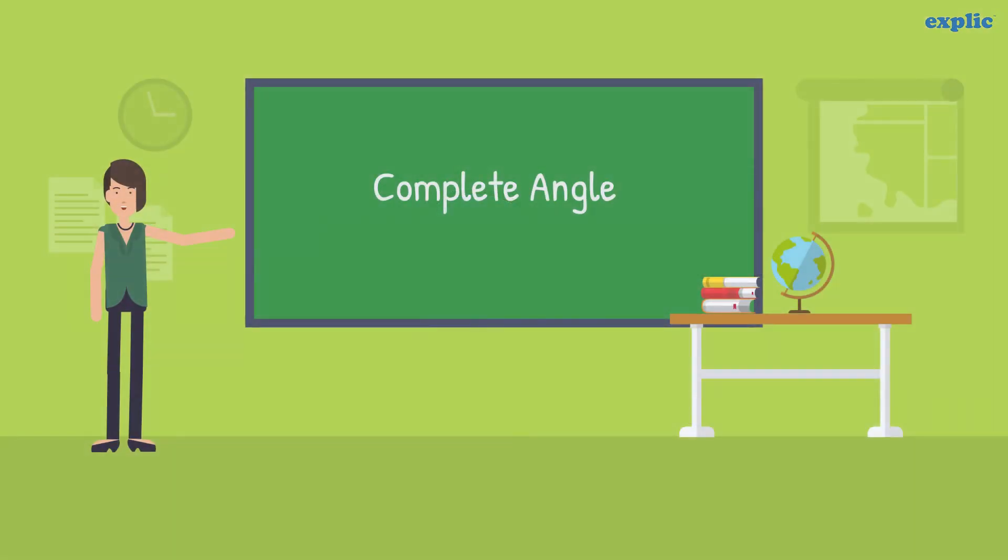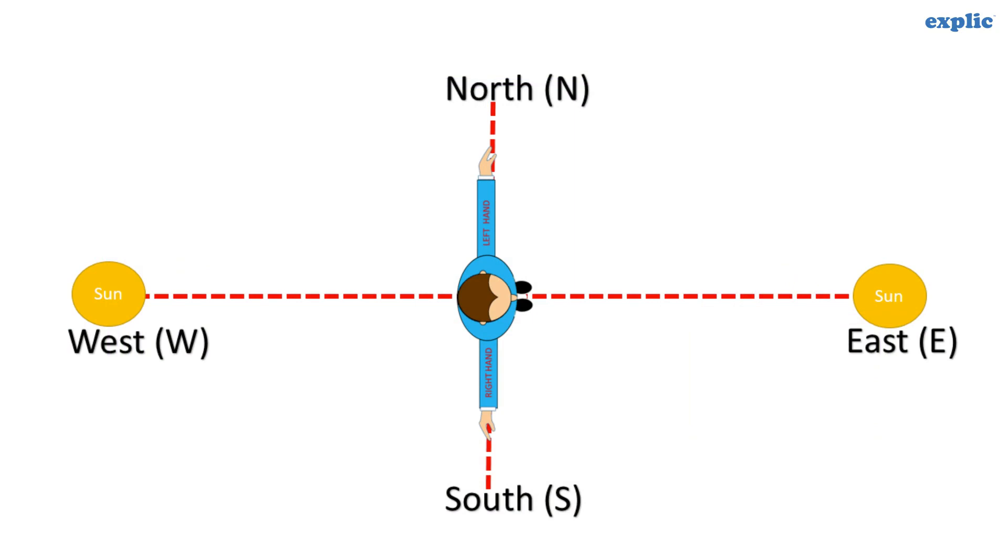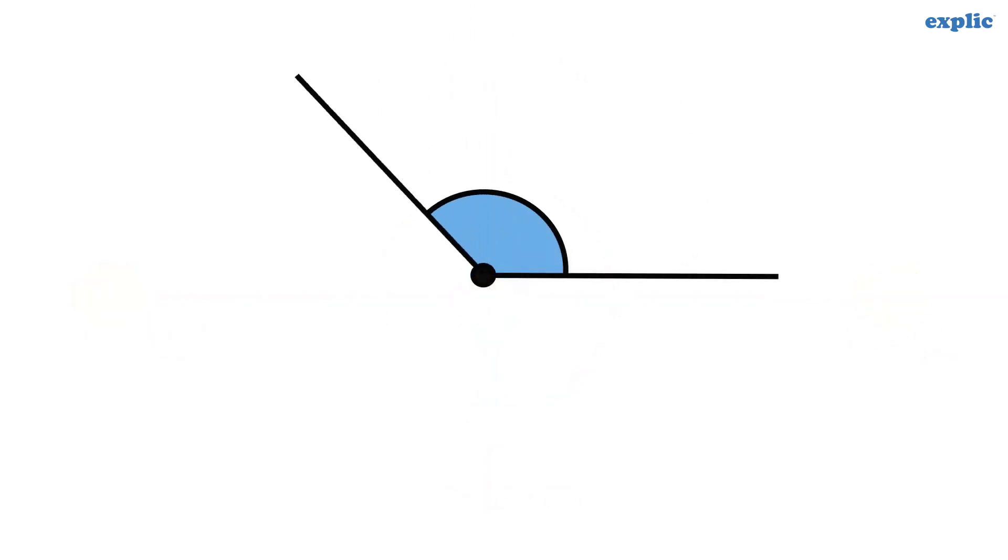A complete angle can be achieved by spinning one full rotation. If you are standing facing the east, just spin at your place anti-clockwise or clockwise to face the east again. The measurement of a complete angle is 360 degrees. A complete angle is also called a full revolution.